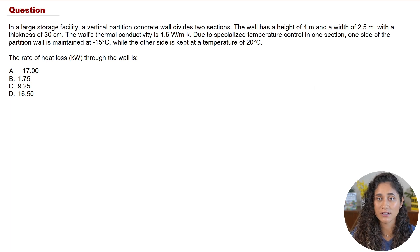In a large storage facility a vertical partition concrete wall divides two sections. We are given the height, the width, the thickness and the thermal conductivity of the concrete wall and due to specialized temperature control in one section, one side of the partition wall is maintained at minus 15 degrees celsius while the other side is kept at 20 degrees celsius and we want to determine the rate of heat loss through the wall.